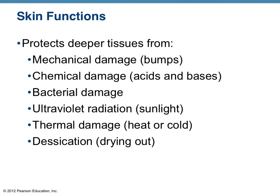Probably the number one function of the skin is the role that it plays in protecting deeper tissue layers from a lot of different things. It doesn't necessarily protect the internal organs like maybe your skeleton — think about your skull protecting your brain, or the thoracic cage protecting internal organs — but it protects them from all of these different examples of possible damage. You don't need to memorize these necessarily, but just recognize that there are a number of different types of damage the skin protects us from.